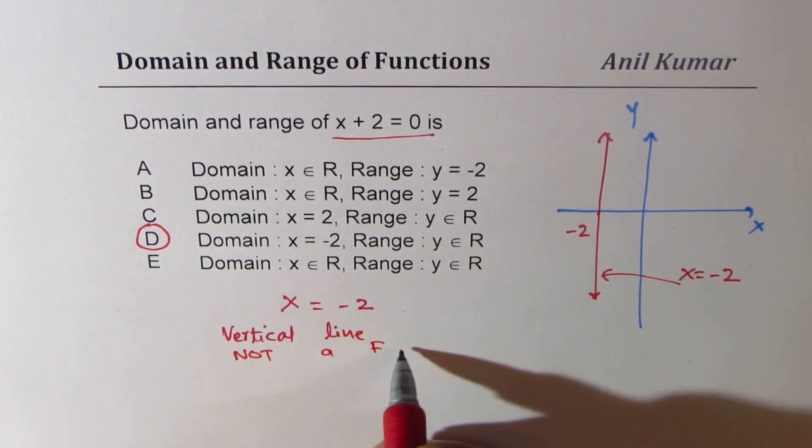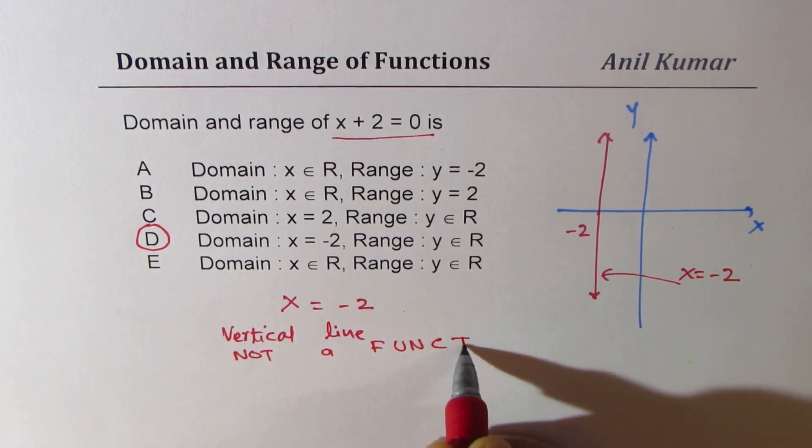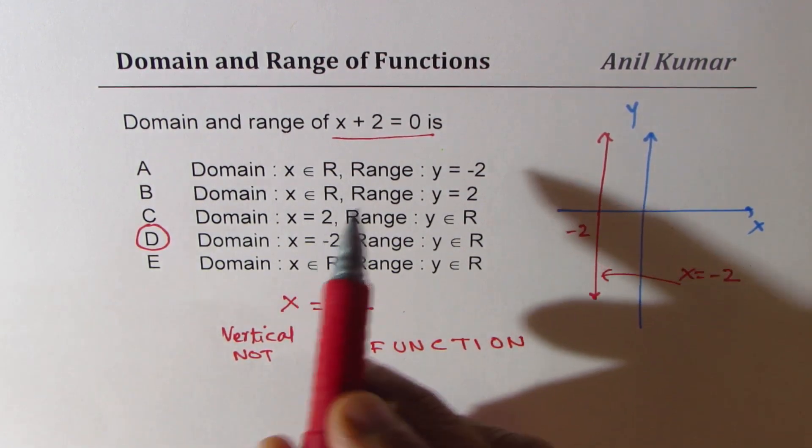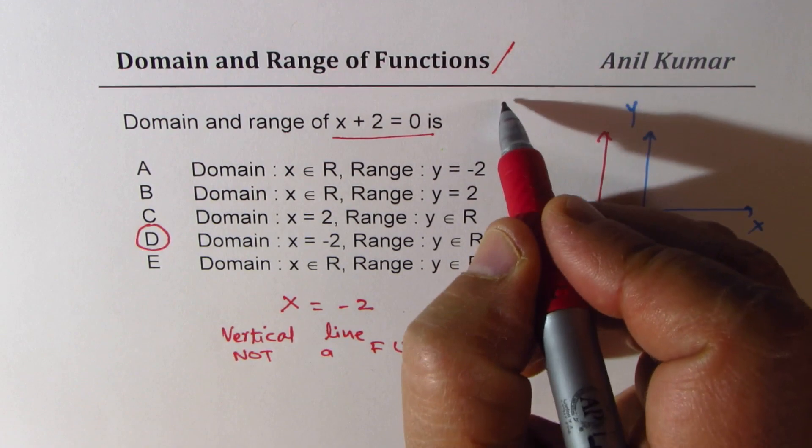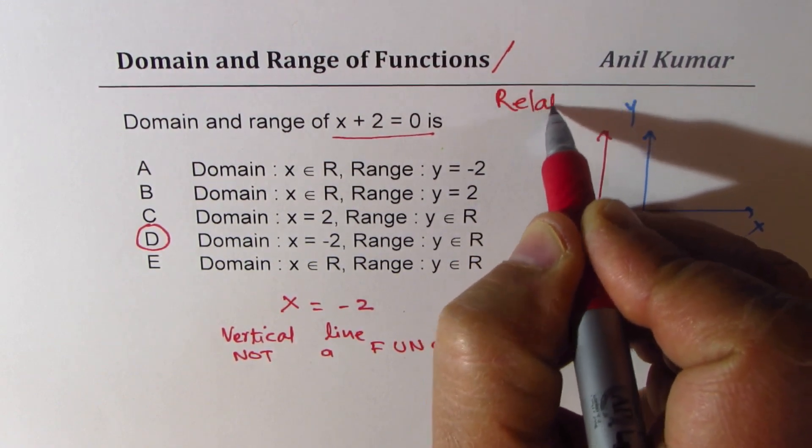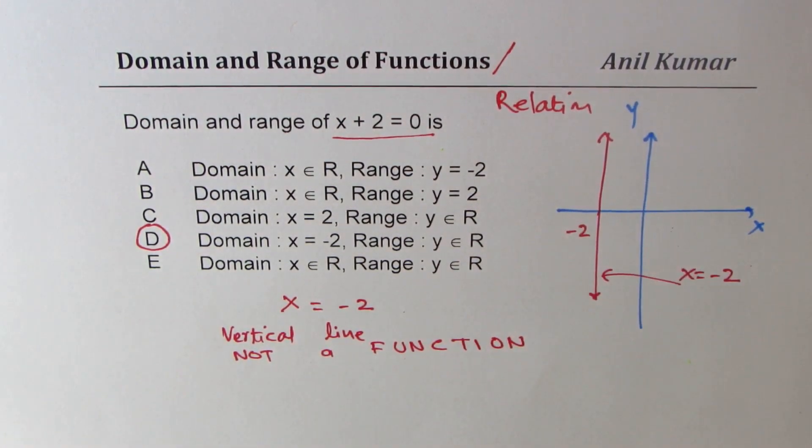So in this particular case, let me say relation, since it fails vertical line test, domain is just minus 2 and the range is all real numbers.